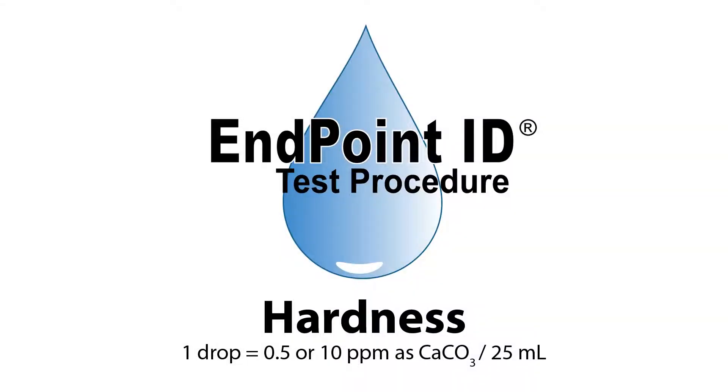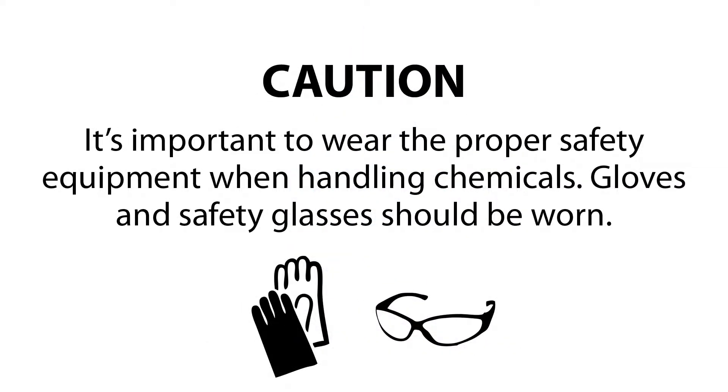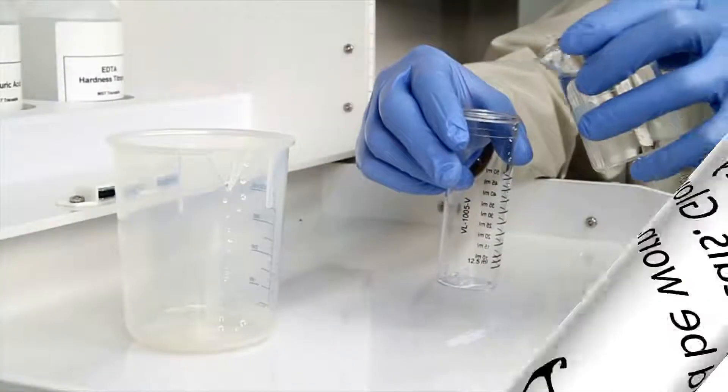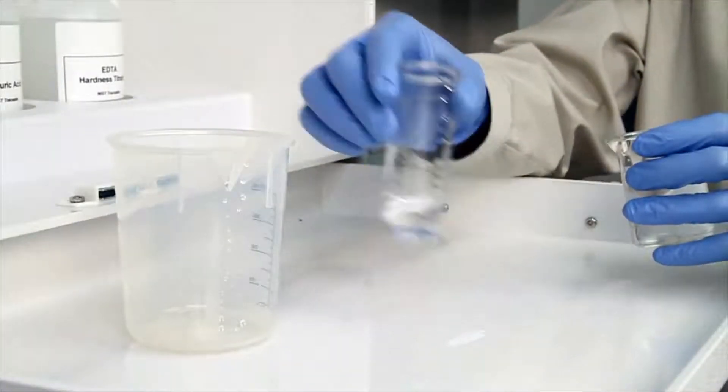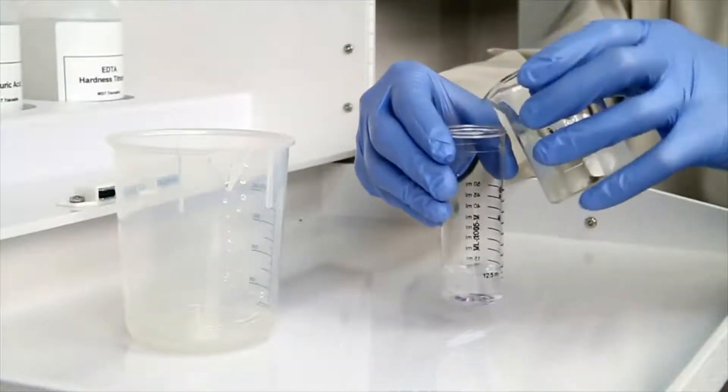This is a demonstration of a total hardness drop count test kit using Endpoint ID procedures. The first step according to the Endpoint ID procedure is to gather an accurate sample. The smallest change in sample size will lead to inaccurate results.